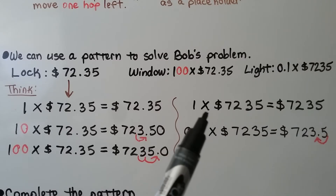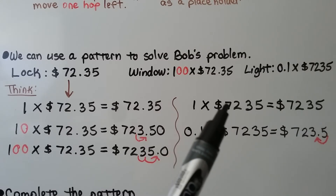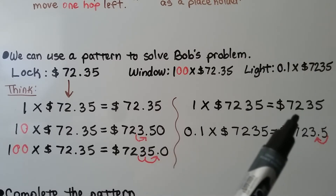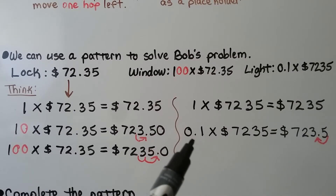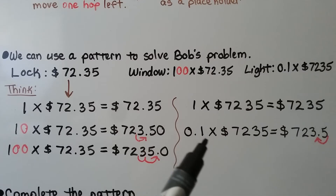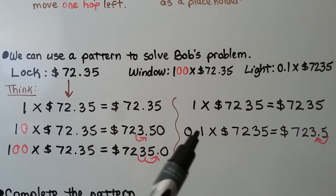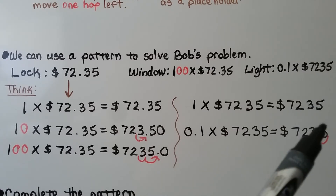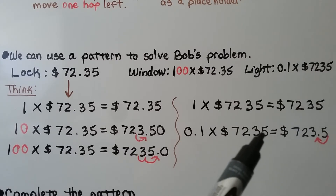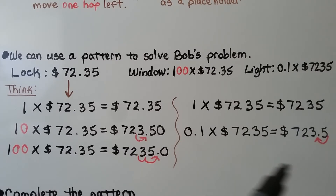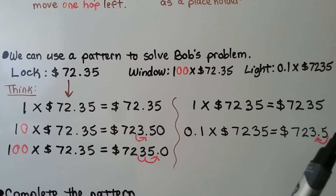Now, to find the light, we know one times $7,235 is $7,235 — it keeps its identity. When we multiply it by one-tenth, we're going to move one hop to the left. The decimal point is over here as a whole number. We're going to move it one hop to the left, in between the three and the five. It will be $723.50, and we add a zero as a placeholder for the fifty cents.